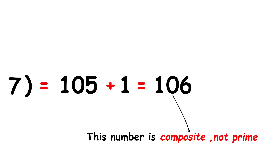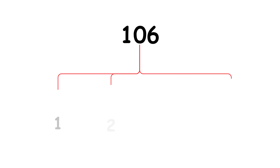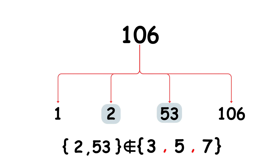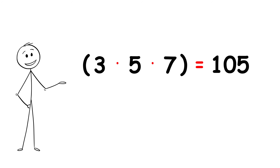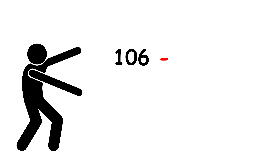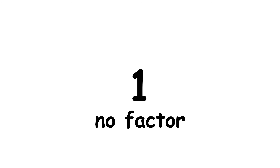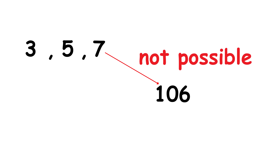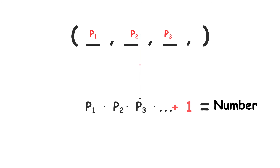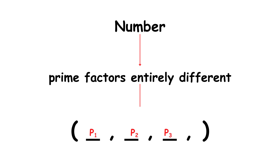This number is composite, not prime. However, notice that 106 has prime factors — those being 2 and 53 — that aren't any of the prime numbers in our starting set. To see why, remember that we calculated 3 times 5 times 7 to get 105. By definition, 3, 5, and 7 are factors of 105. If one of those were also a factor of 106, then it would have to be a factor of 106 minus 105 as well. But 106 minus 105 equals 1, and the number 1 has no factors other than itself, so this isn't possible. Generally, if you have a finite set of prime numbers, then taking their product and adding 1 will give you a number that has prime factors entirely different from the prime numbers in the original set.